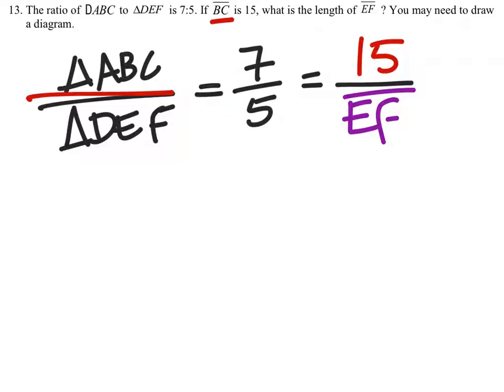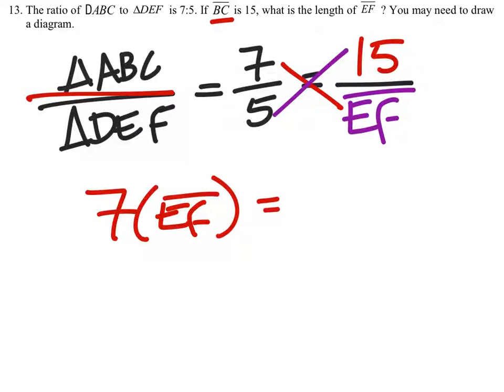We're going to use cross multiplication to find this one. So I do 7 times EF, length EF.